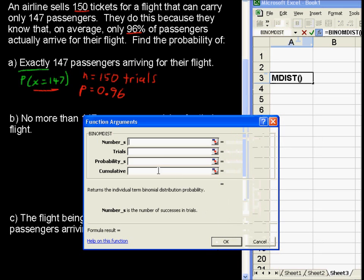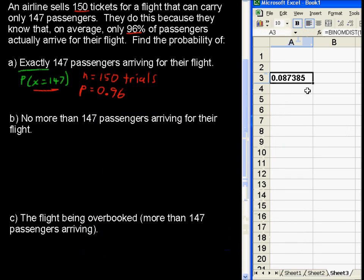Okay, now what do we want? The number S, that's number of successes, and we want exactly 147 successes. The number of trials we have is 150. The probability of success in any one trial is 0.96. And is it a cumulative? When we're talking about an exact number of successes, we say false. You could type in just a zero also, but I'm going to type in false to say that this is not a cumulative distribution. We're not adding up probabilities. So, we see the answer right there.